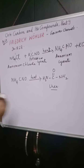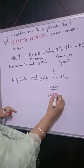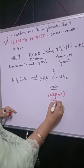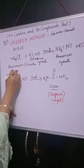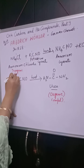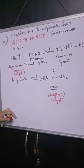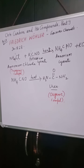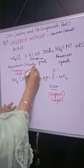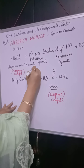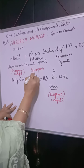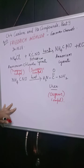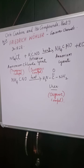Urea is an organic compound — the interesting thing is that this organic compound was made from two inorganic compounds, which was earlier thought to be impossible. Both potassium cyanate and ammonium chloride were inorganic. So Friedrich Wöhler gave a death blow to the Vital Force Theory, and after that many more compounds were synthesized from inorganic sources.